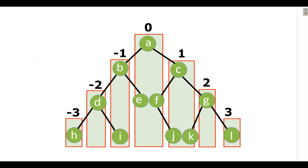So summarizing: minus three will be H, minus two will be D, minus one will be I, zero will be A, E, F, one will be C, J, K, two will be G, and three will be L.